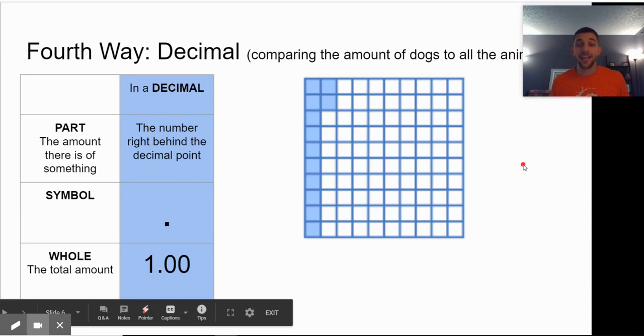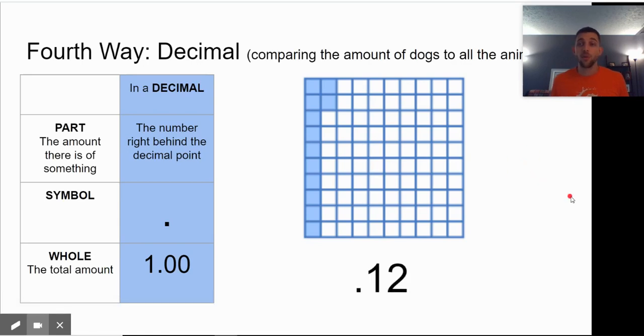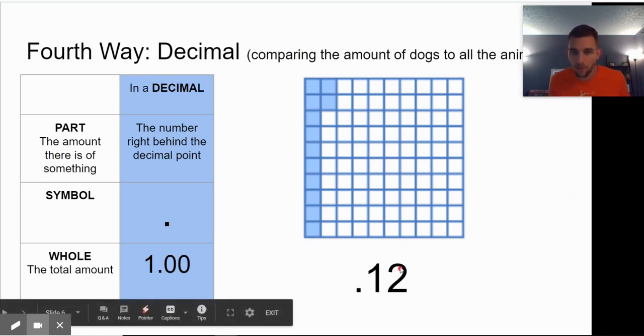The fourth way is to write a decimal. And the way that we would write this is it's 12 out of 100. And so we're going to put 12. And notice we have the tens place. That's here. And then the hundreds place, which is where the 2 is. So this is 12 hundredths, because it's in the hundreds place.